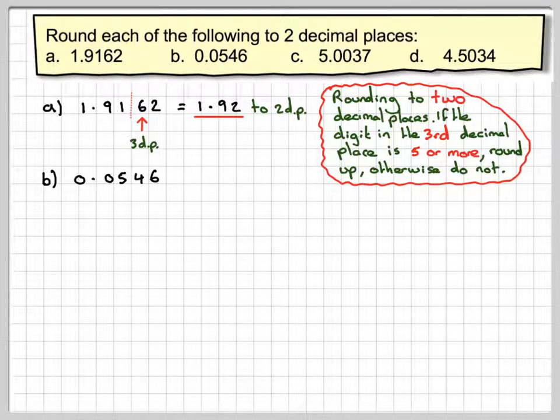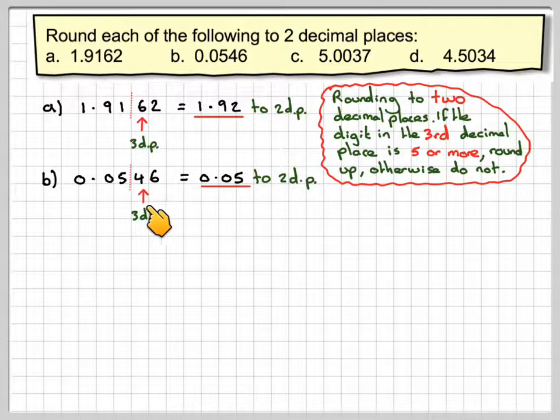B, we've got 0.0546. The third decimal place is actually the four here, and therefore it has no effect on the five because it's less than five. Therefore, this becomes 0.05 to two decimal places.